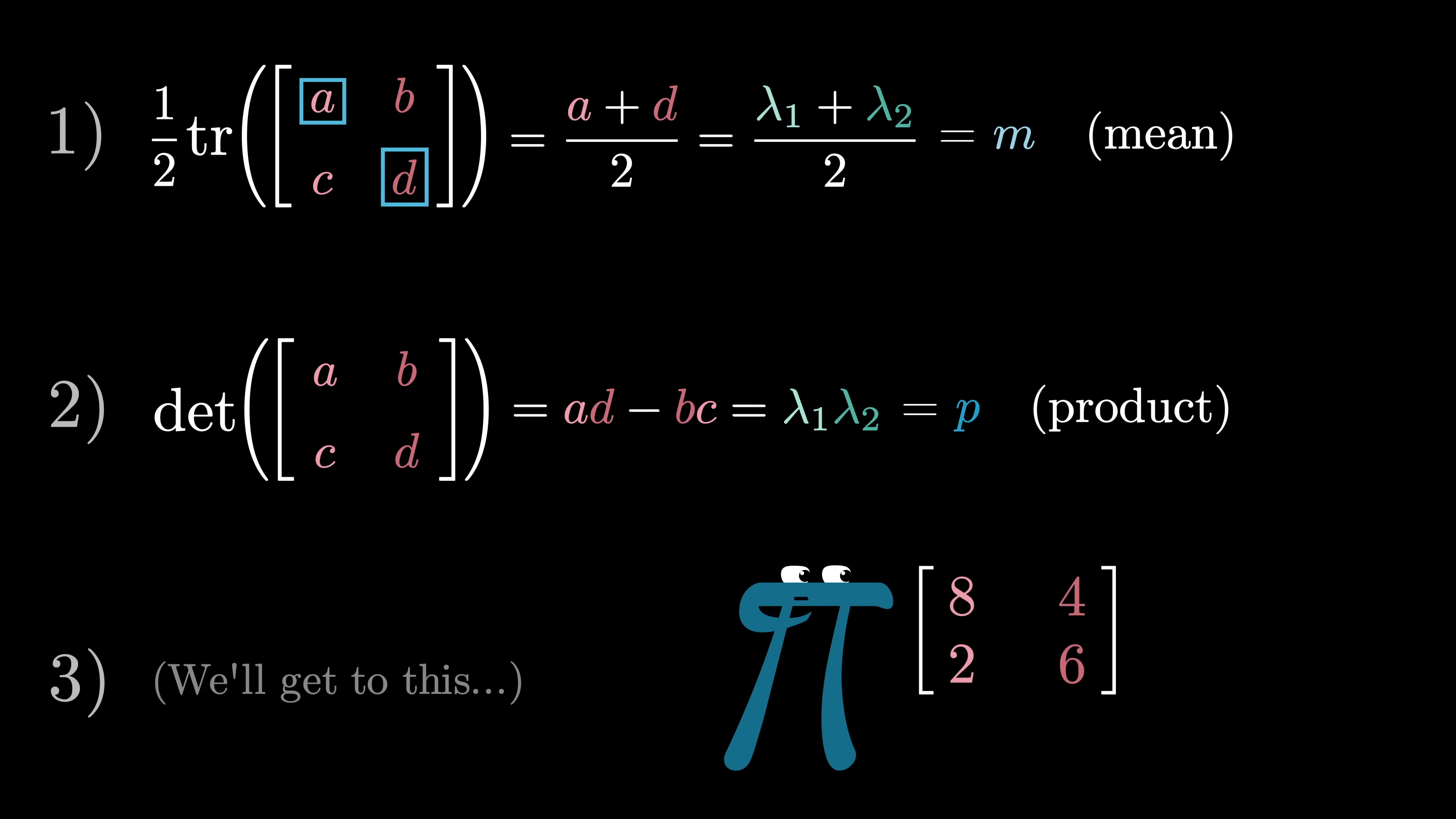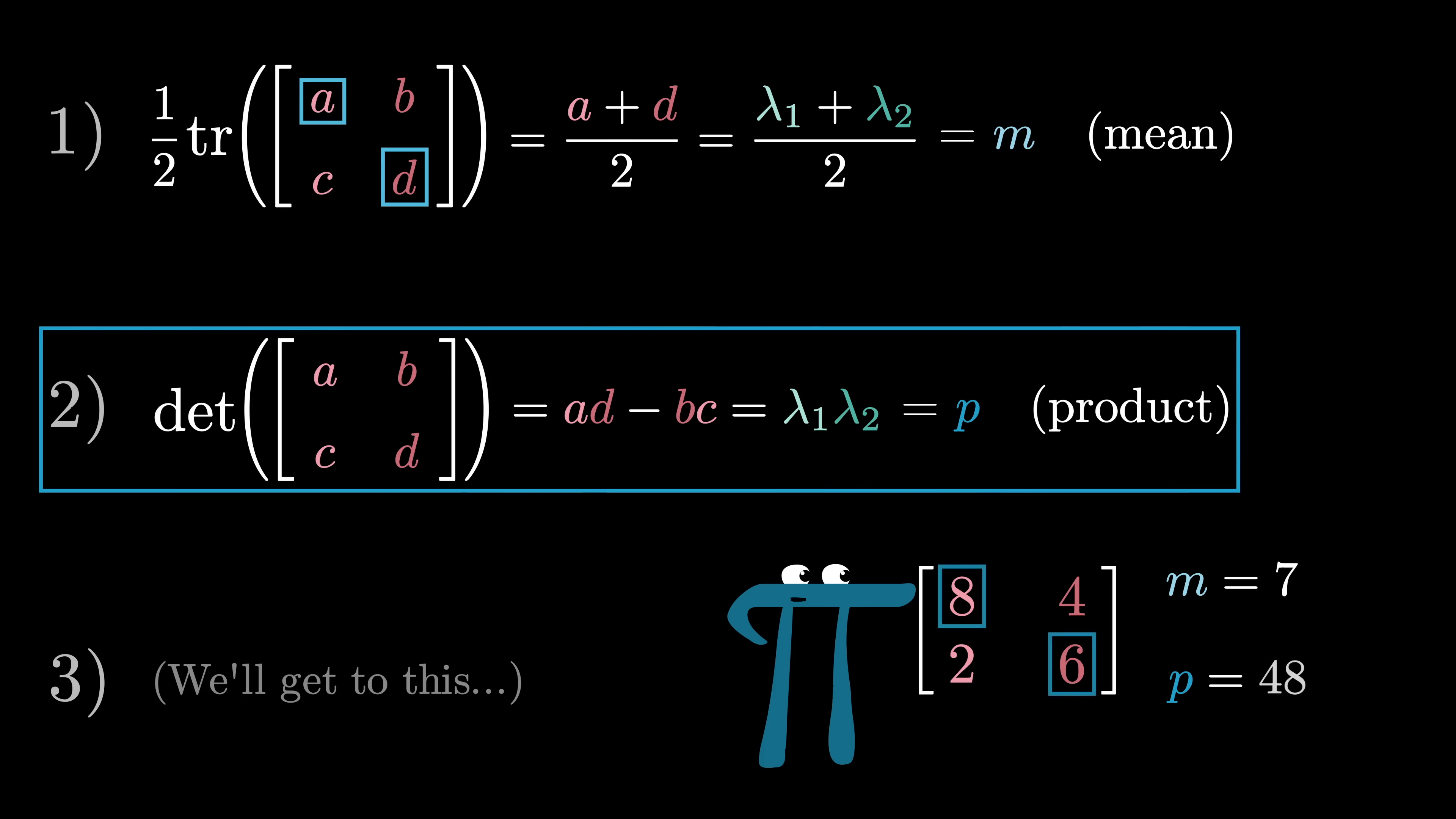Take this matrix here as an example. Straight away you can know that the mean of the eigenvalues is the same as the mean of 8 and 6, which is 7. Likewise most linear algebra students are pretty well practiced at finding the determinant, which in this case works out to be 48 minus 8. So right away you know that the product of the two eigenvalues is 40.